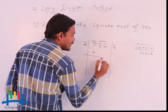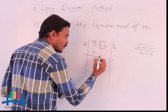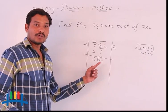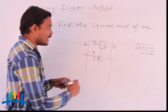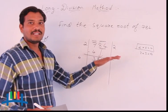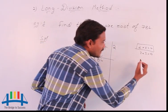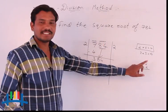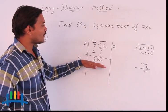After subtracting, we bring down the second period, making it 384. To get the next divisor, the new divisor is obtained by taking 2 times the quotient. The quotient is 2, so 2 times 2 is 4. We annex a digit to 4 — if I take 2, I should multiply 42 by 2, giving 84, which is far from 384. Taking 45 times 5 gives 225, also far from 384.